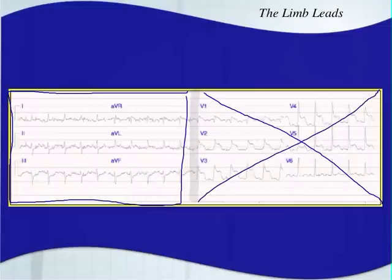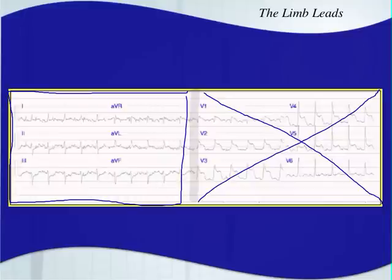Bipolar means they use a positive and a negative electrode to obtain those leads. The augmented leads — AVR, AVL, and AVF — have a positive electrode, but they use two other electrodes to cancel out, so to speak, to get the negative side. If you picture the heart, the heart ends up being where the negative pole would be.